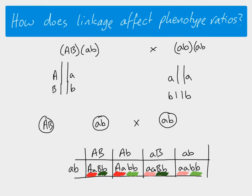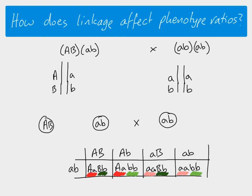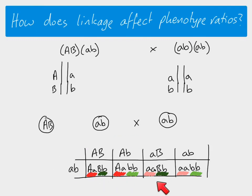We do the same for the other individual, using brackets to show linked genes on the same chromosome. Because this individual is homozygous for both genes, there's only one possible gamete — the same as before. So we now have two possible gametes from the heterozygous parent instead of four, and one gamete from this parent. That means our Punnett square is going to look different.